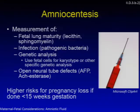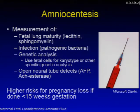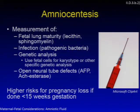Moving on to amniotic fluid: amniocentesis is performed to measure fetal lung maturity — by measurement of lecithin and sphingomyelin — to detect infection by identification of pathogenic bacteria, for genetic analysis using fetal cells for karyotype, or to detect open neural tube defects by measuring AFP and acetylcholinesterase. Amniocentesis performed at less than 15 weeks gestation carries a higher risk for pregnancy loss.